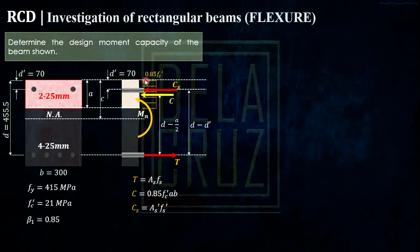Now, the moment here is the compression times d minus A over 2, and CS times this distance, d minus d prime. That is just basically force times distance. A moment is a force times distance. So how will we start to solve the distance C? So we can solve that by equating the forces. So the tension force is equals to the compression plus the compression of the steel bars. Kaya ganito yung equation.